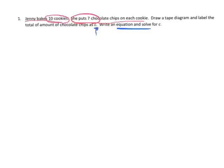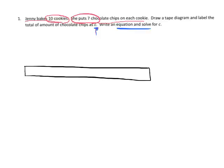She bakes 10 cookies, so I'm going to draw a tape diagram representing those 10 cookies. The first thing I'm going to do is cut it in half, and then I'm going to cut each half into 5 pieces — 1, 2, 3, 4, 5. So I now have 10 pieces, and those 10 pieces represent the 10 cookies. Each cookie has a 7 on it, meaning 7 chocolate chips.